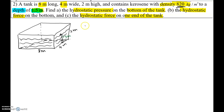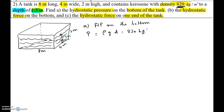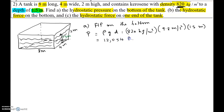The first part of the problem is asking for the hydrostatic pressure on the bottom of the tank. By the formula, pressure equals rho times g times d. Rho is the density, which is given as 820 kg per meter cube, g is 9.8 meters per second squared, and d is the depth of the liquid which is 1.5 meters. If you compute that, you get 12,054 pascals.